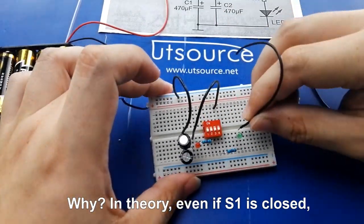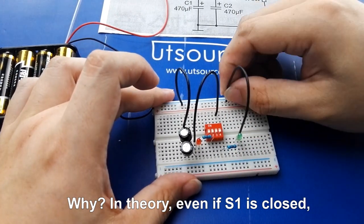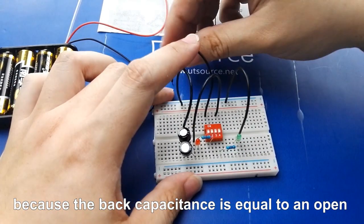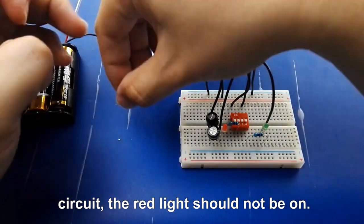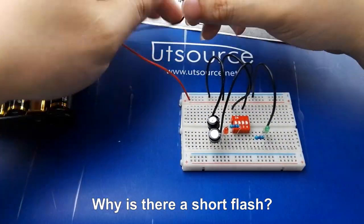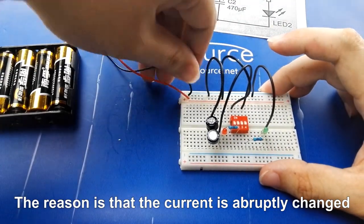Why? In theory, even if S1 is closed, because the capacitance is equal to an open circuit, the red light should not be on. Why is there a short flash?